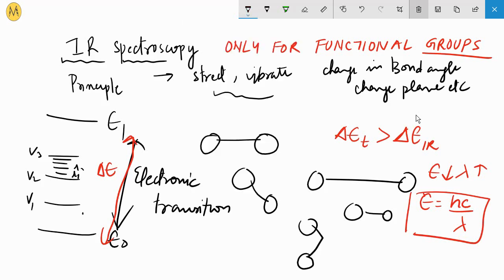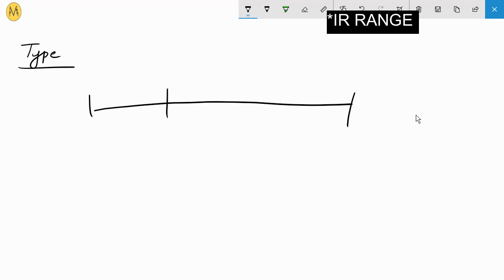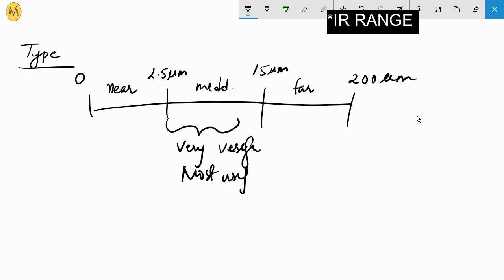Let's discuss the type and range. This is the UV range. Let's divide this in three regions: near band, middle band, and far band. Near band is from 0 to 2.5 microns, extending to 15 microns, and this can go to 200 microns. This middle band is the most useful.